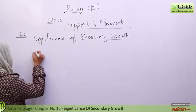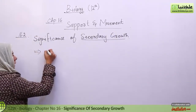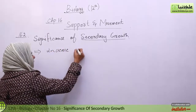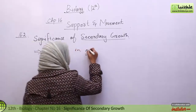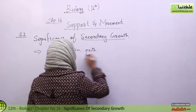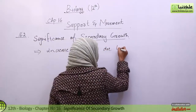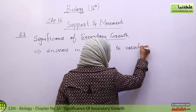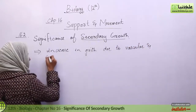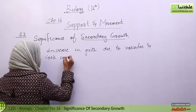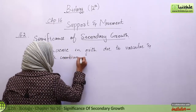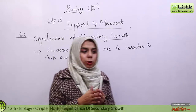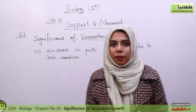The increase in width due to vascular cambium and cork cambium is known as Secondary Growth. If the plant increases in its thickness, that is secondary growth.